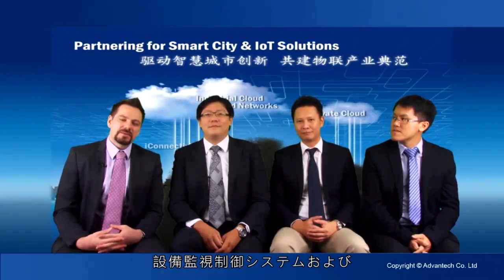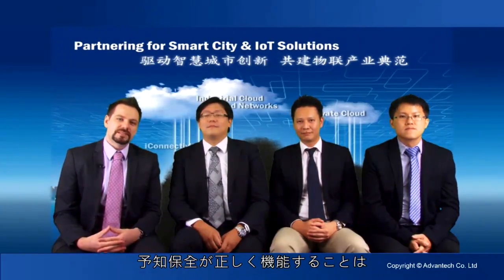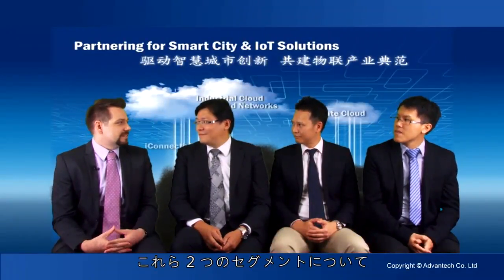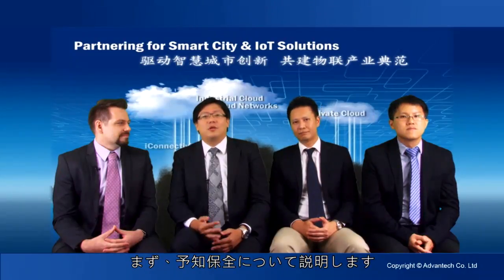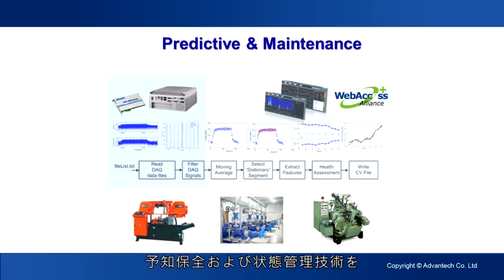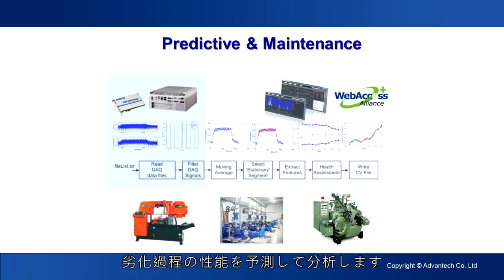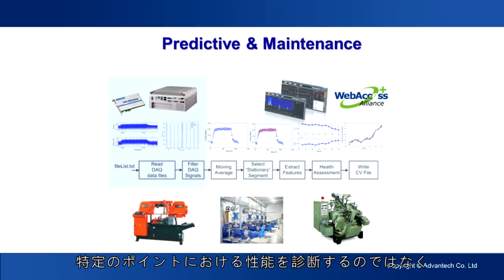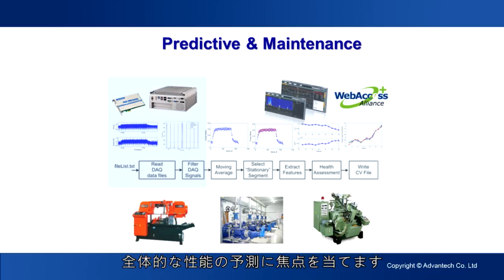A functional facility monitoring control system and predictive maintenance are crucial for manufacturing quality control. Brian, can you tell us more details about these two segments? In order to ensure near-zero breakdown of equipment, the Intelligent Maintenance System (IMS) actively implements predictive maintenance and health management techniques in industrial production. The system predicts and evaluates the performance of the degradation process of equipment and products. Different from early malfunction diagnosis, intelligent maintenance focuses on predicting the entire performance degradation process rather than diagnosing performance at individual points.